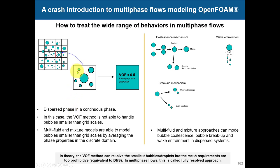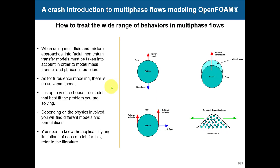The other approach is resolving the separated interface, but for the dispersed case you also need to account for interactions between bubbles and droplets — mechanisms like coalescence, breakup, and wave entrainment. These are handled by what is known as population balance models. Everything enters into multi-phase flows.